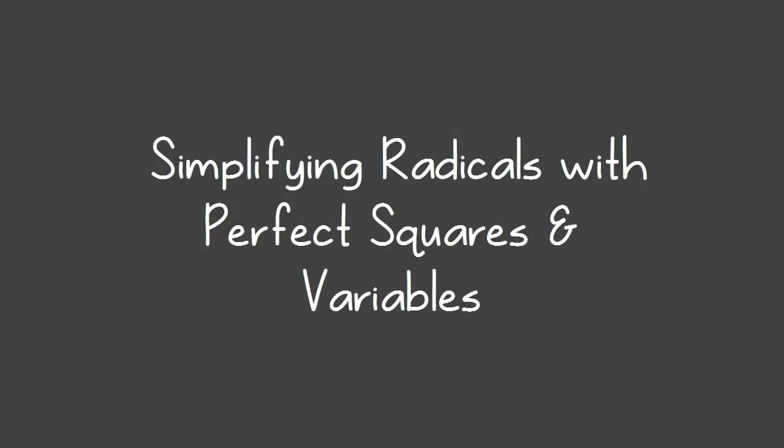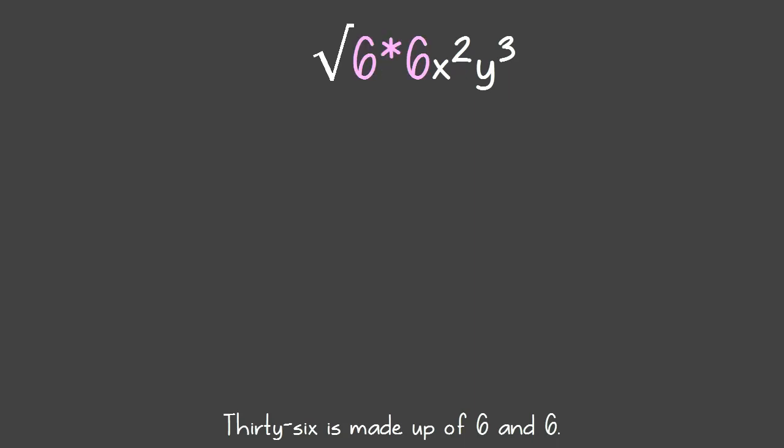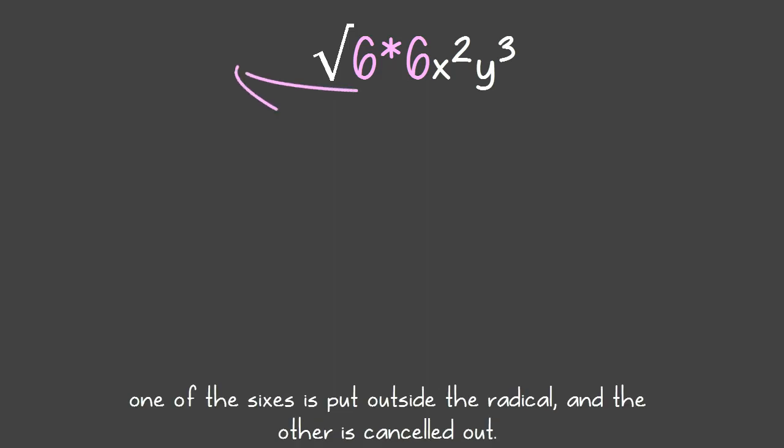Simplifying radicals with perfect squares and variables. In this case, 36 is the perfect square. 36 is made up of 6 and 6. Because we're finding the square root of 36, one of the 6's is put outside the radical. The other is cancelled out.